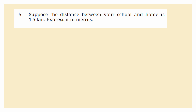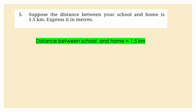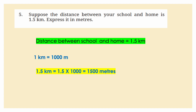Suppose the distance between your school and home is 1.5 kilometers. Express it in meters. Since 1 kilometer equals 1000 meters, 1.5 kilometers equals 1.5 × 1000 = 1,500 meters. So the distance is 1,500 meters.